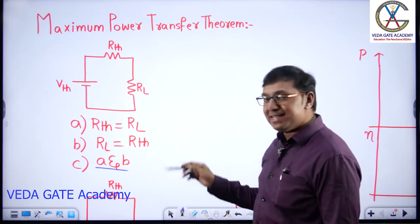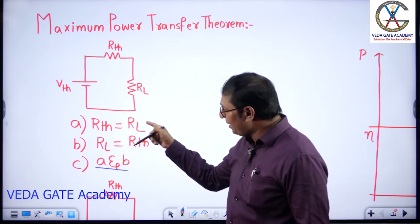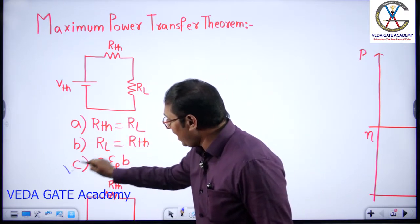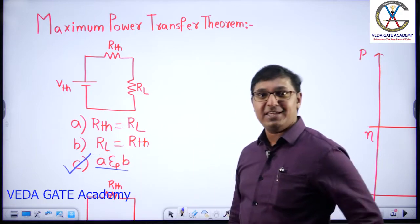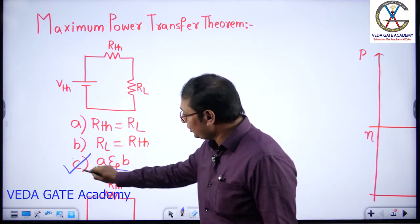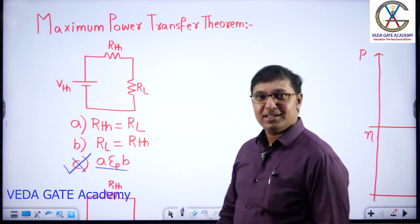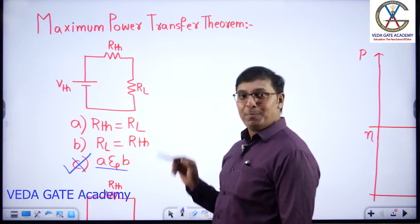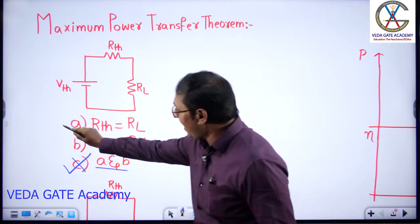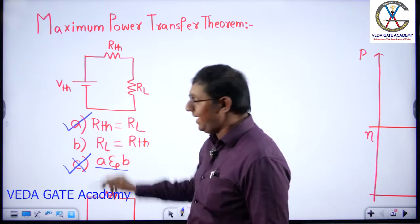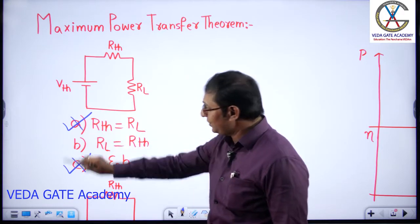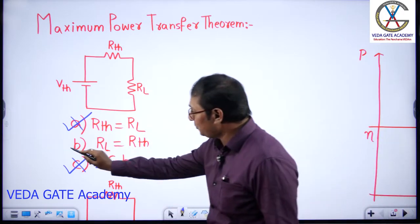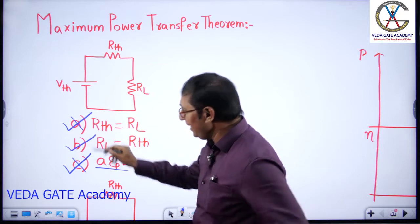Many will say, as per mathematics, if A equals B then B equals A, and want to mark option C as correct — which is wrong. Some will say source resistance should equal load resistance and mark option A — again wrong. Option B is correct.